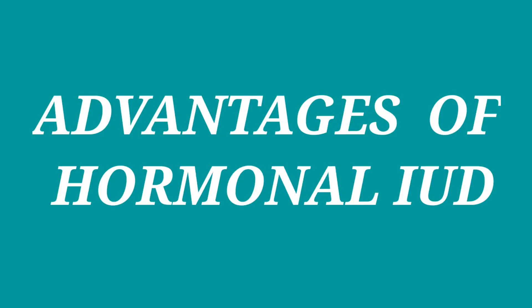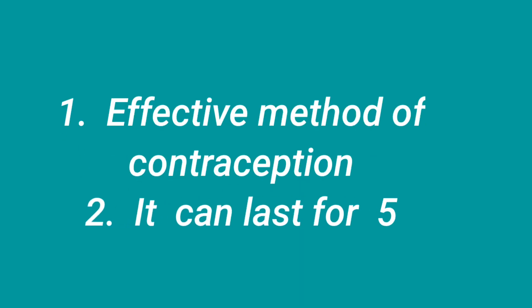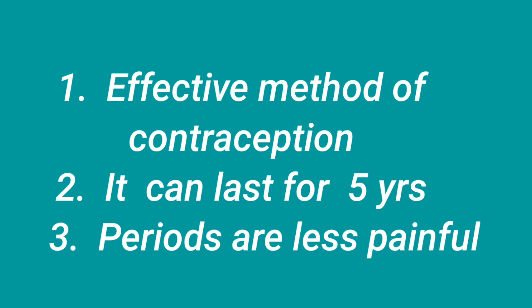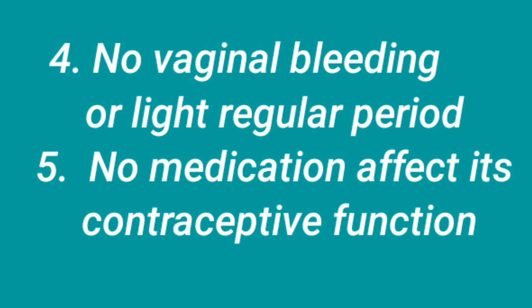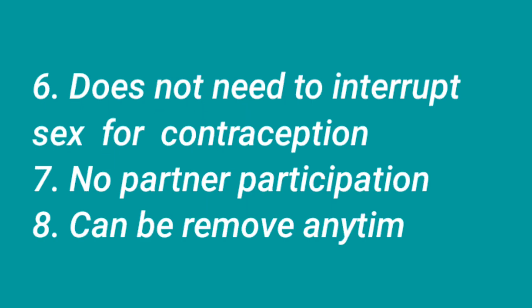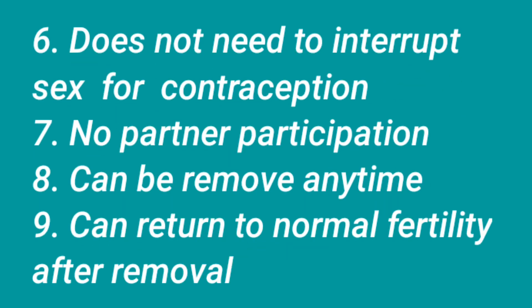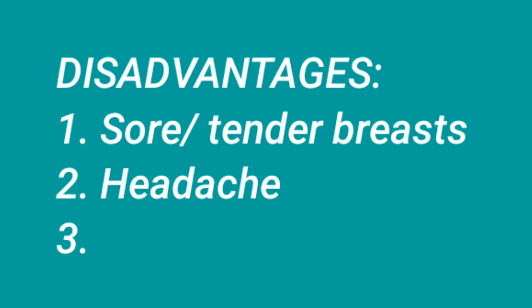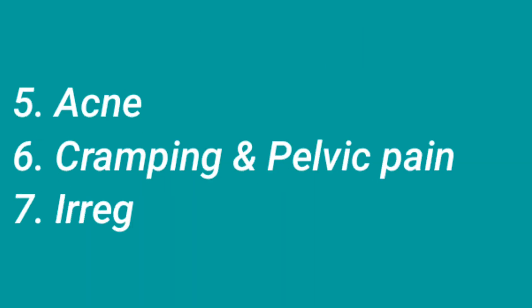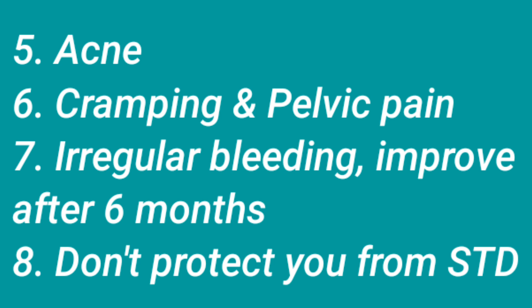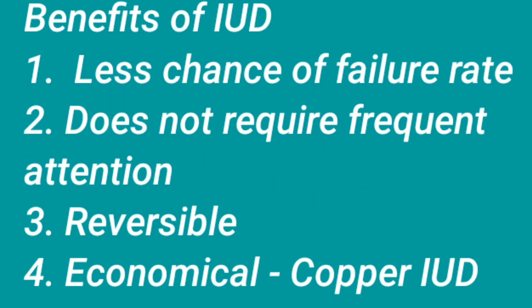Advantages of hormonal IUD: it is an effective method of contraception, can last for five years, periods are less painful, no vaginal bleeding or light regular period, no medication affects its contraceptive function, does not interrupt sex, no partner participation required, can be removed anytime, and fertility returns after removal. Disadvantages include sore or tender breasts, headache, mood changes, weight gain, acne, cramping and pelvic pain, irregular bleeding that improves after six months, and it does not protect against STDs.